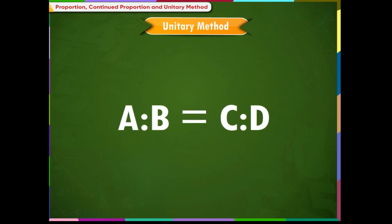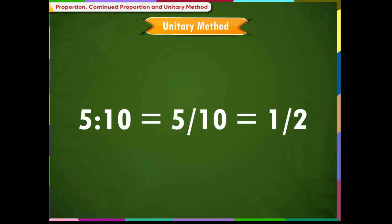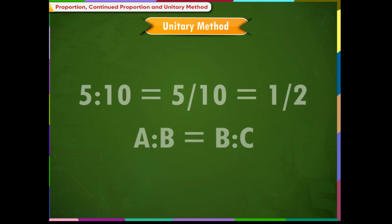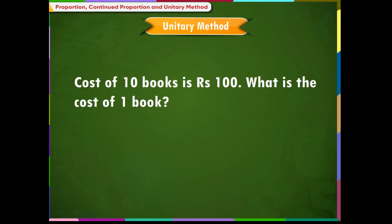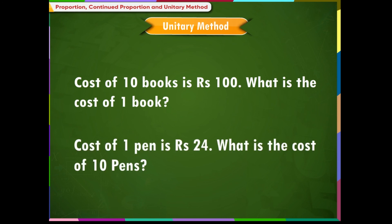Summary: If two ratios are equal, we say they are in proportion. Only equivalent fractions are proportional. Three quantities are said to be in continued proportion if the ratio between the first and second equals the ratio between the second and third. In the unitary method, we find the value of one unit from multiple units, and can also find the value of multiple units from the value of one unit.